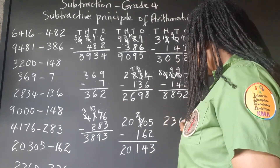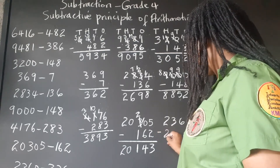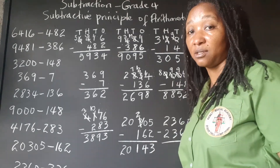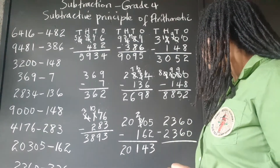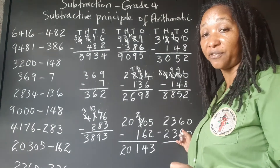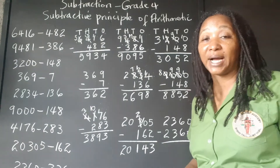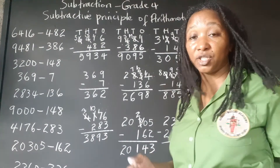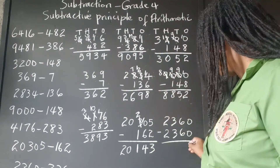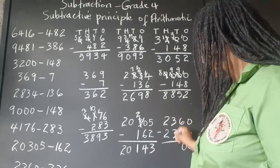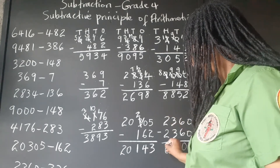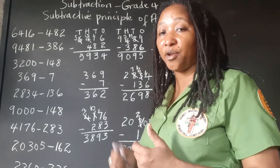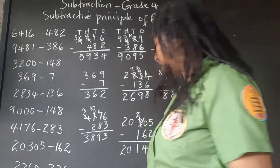Finally, 2,360 take away 2,360. Do you notice it's the same number being subtracted from itself? Whenever we subtract a number from itself, we get 0. 6 take away 6 is 0, 3 take away 3 is 0, 2 take away 2 is 0. For subtraction, whenever we take a number from itself, the answer is 0.